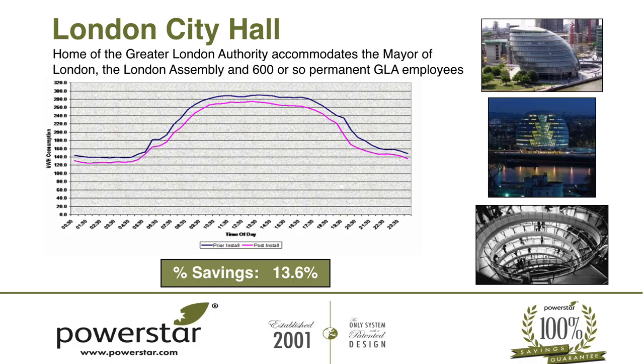London City Hall achieved a 13.6% energy saving, again verified by IPMVP. They have 500 kilowatts of solar PV — their solar PV output improved by 10% after voltage optimisation went in, because the inverters were now running at the correct voltage output within the correct inverter curve. So voltage optimisation and solar do go hand in hand.